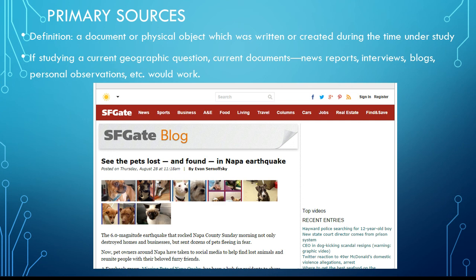Because many geographic questions have to do with current events, things like news reports, interviews, and even blogs are useful. Here's a blog from the recent earthquake in California, talking about one of the problems that people faced there, which was finding their lost pets.